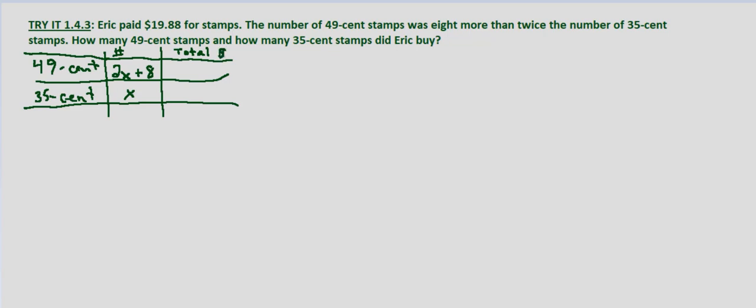So the total amount would be how much each stamp is times the number of stamps. That would be 49 cents times 2x plus 8 for the 49-cent stamps, and 35 cents times x for the number of 35-cent stamps. We know that total amount is going to be $19.88.